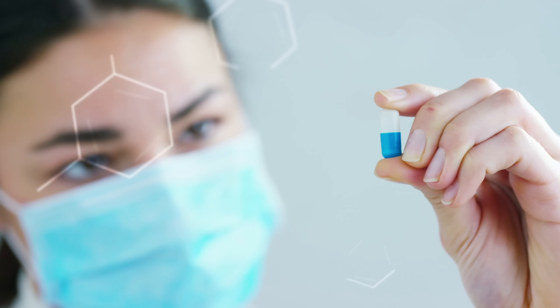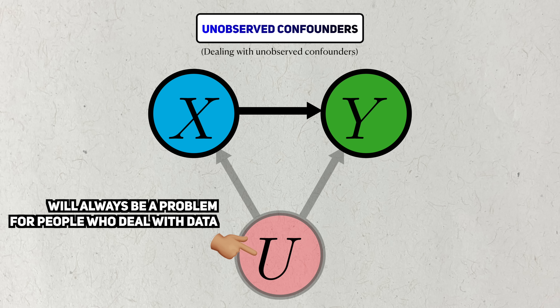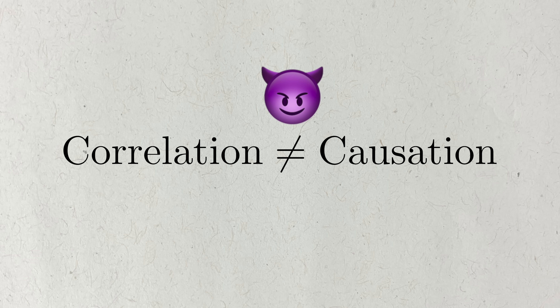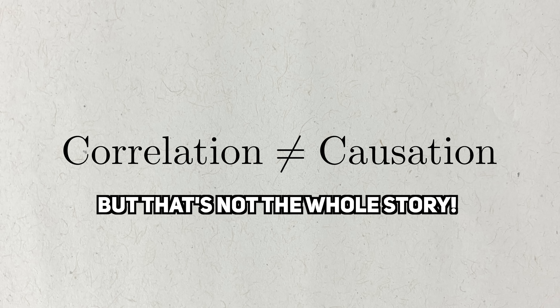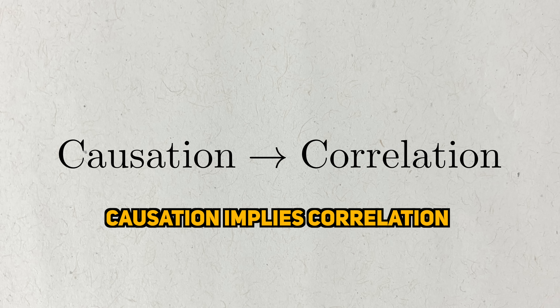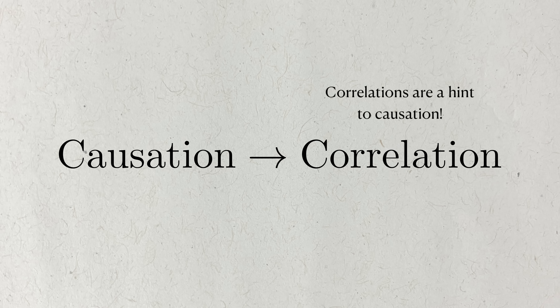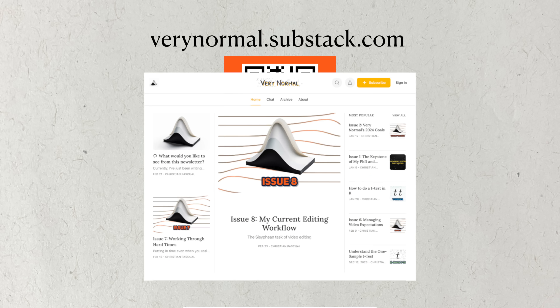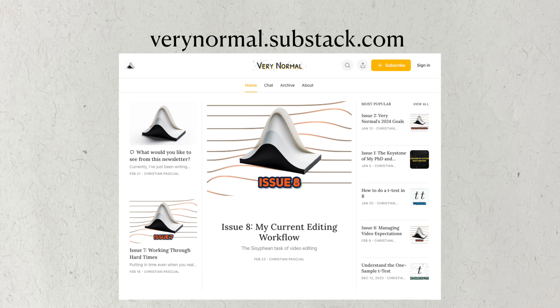If we were, we wouldn't be able to get new medicines to people who need them. Unobserved confounders will always be a problem, but knowing they exist is the first step in figuring out how to overcome them. In this video, we learned about the problem of confounders and saw how they can get in the way of estimating causal effects. Correlation does not equal causation — but that's not the whole story, at least in statistics. If an exposure causes a change in an outcome, then they're also correlated. Causation implies correlation, just not the other way around. Instead, a correlation is a hint to causation that could be researched further or leveraged for prediction.